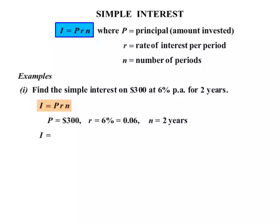So using our formula, I equals P firstly, which is $300, we're multiplying by the rate 0.06, and finally multiplying also by N which is 2 years. And if we calculate that, it works out to be $36.